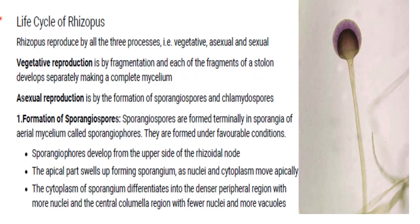Coming to the life cycle of Rhizopus: it reproduces by all three processes — vegetative, asexual, and sexual reproduction. Vegetative reproduction is by fragmentation; each fragment of the stolon develops separately into a complete mycelium. Asexual reproduction is by the formation of sporangiospores and chlamydospores.